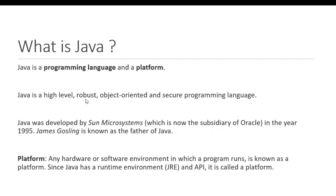Java is a robust and object-oriented programming language. Java is also a secure programming language. Java was initially developed by Sun Microsystem. After some period of time, it became a subsidiary of Oracle. In the year 1995, Oracle acquired Sun Microsystem and Java now comes under Oracle. James Gosling is known as the father of Java — he was the inventor of the Java programming language.